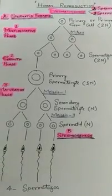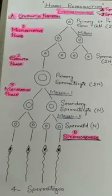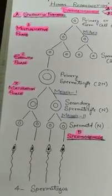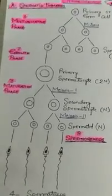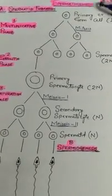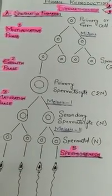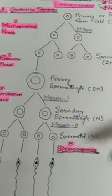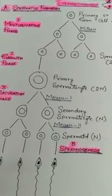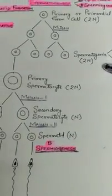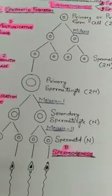Hello everyone, welcome to our channel Bio Skill Circle. In this video we are going to discuss the process of spermatogenesis in detail. Spermatogenesis is the formation of haploid, microscopic, and functional male gametes — that is spermatozoa — from the diploid reproductive cells called spermatogonia, present in the testes of male organisms.